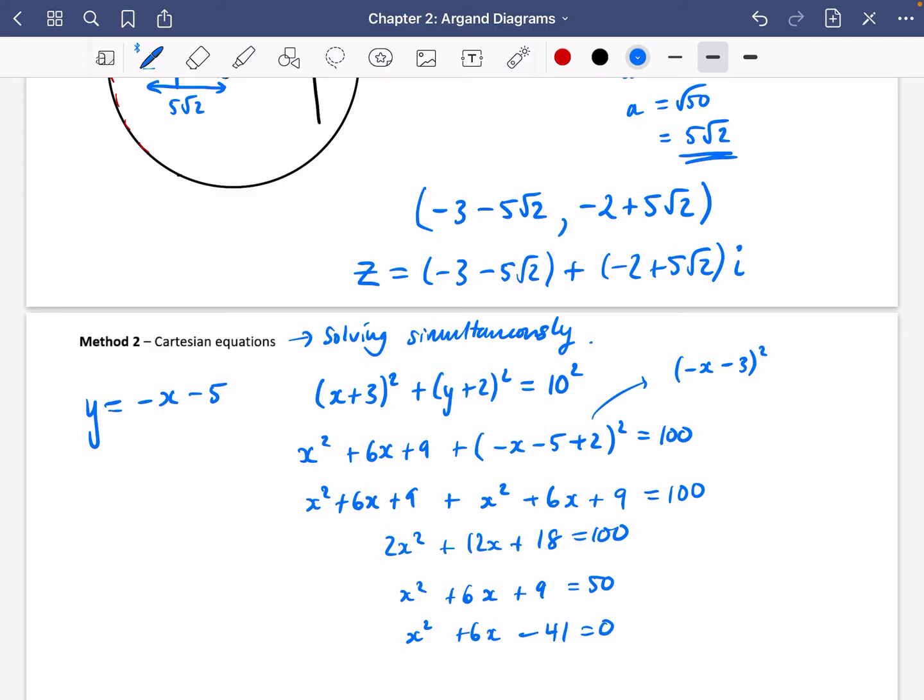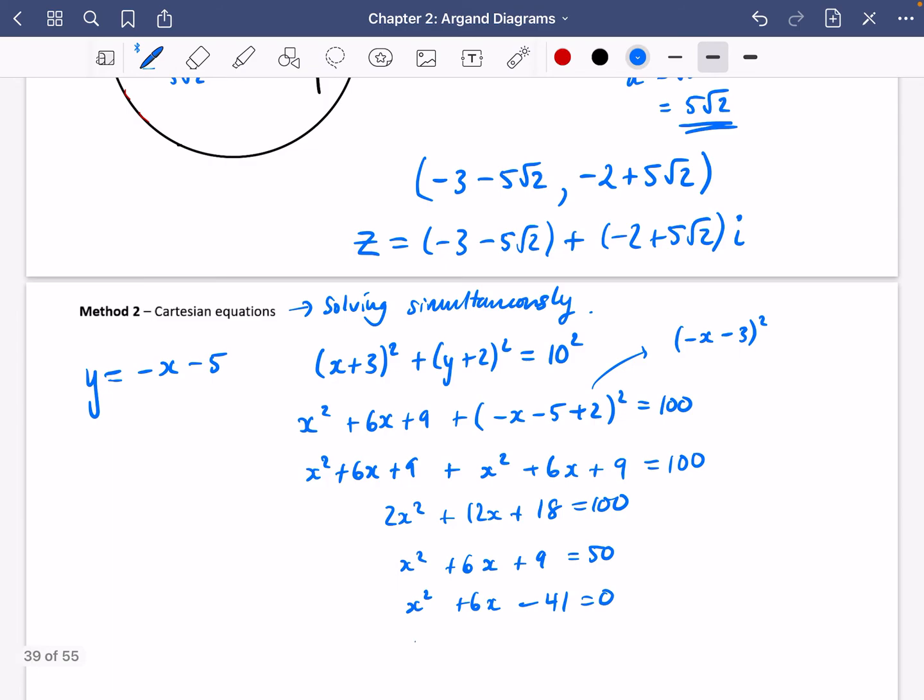Now I'm going to go to my quadratic equation solver just off screen here. So I'm going to put in my 1, 6 and minus 41. And we get that x is either equal to minus 3 plus 5 root 2 or x is equal to minus 3 minus 5 root 2.